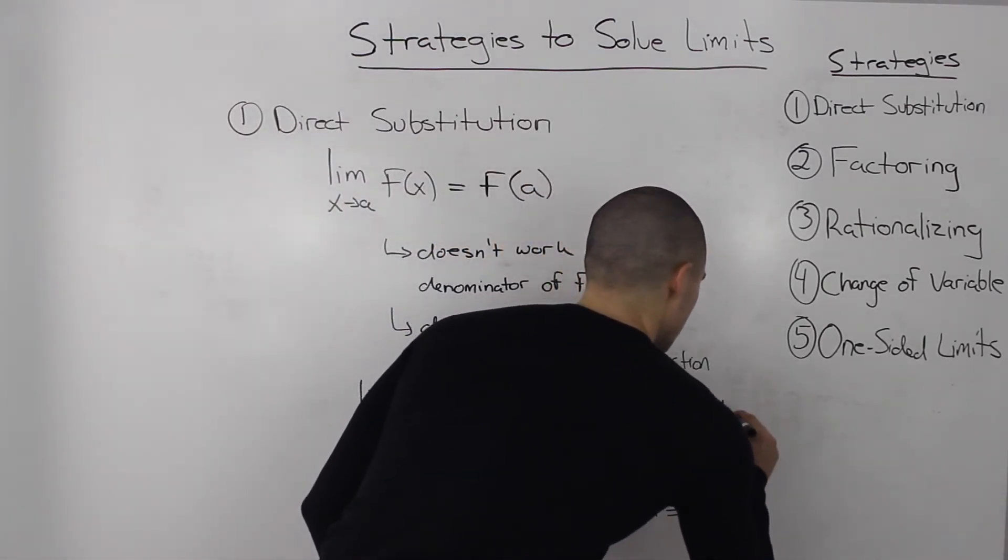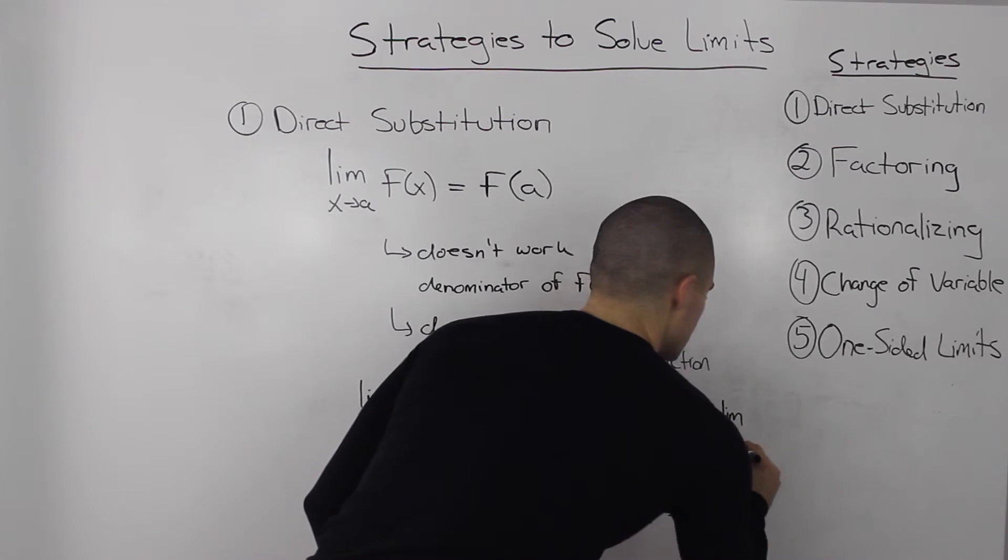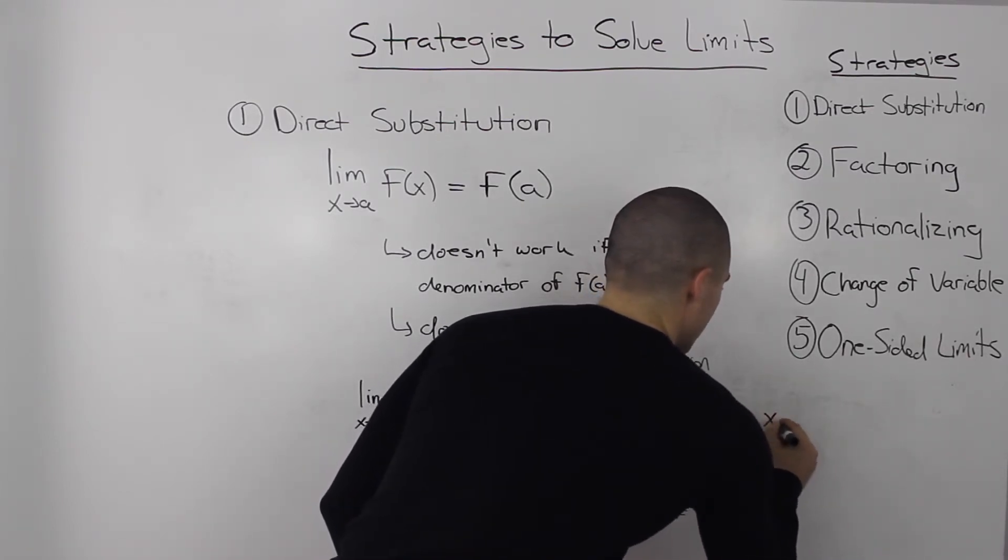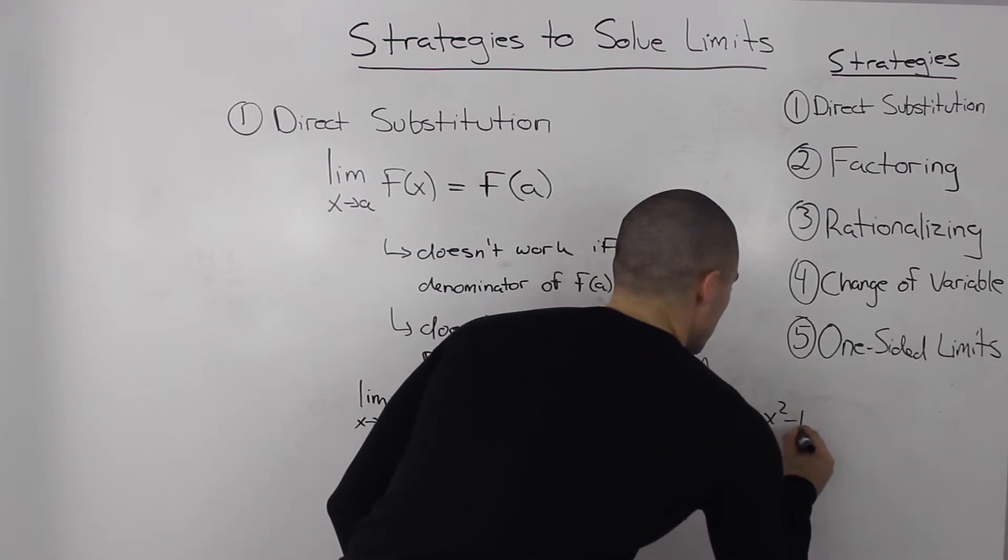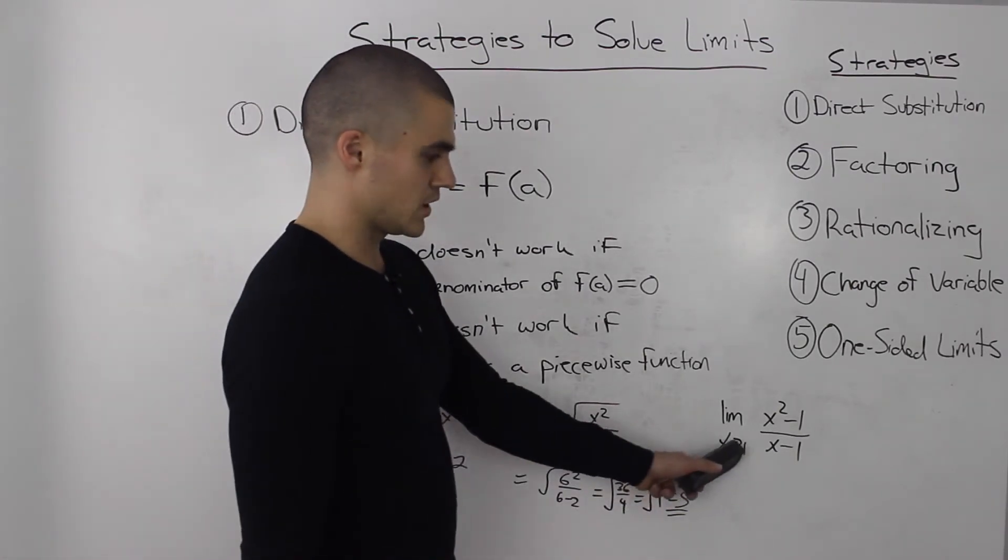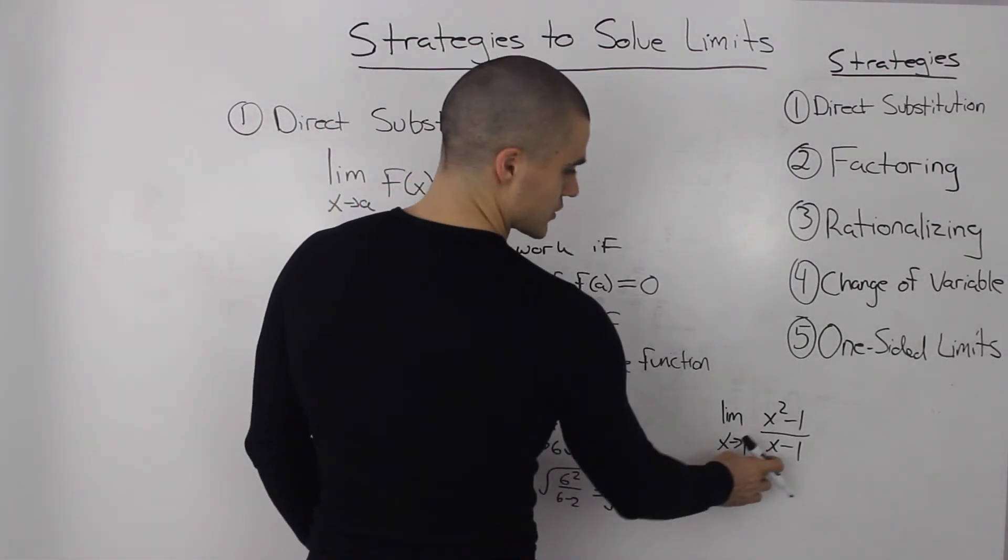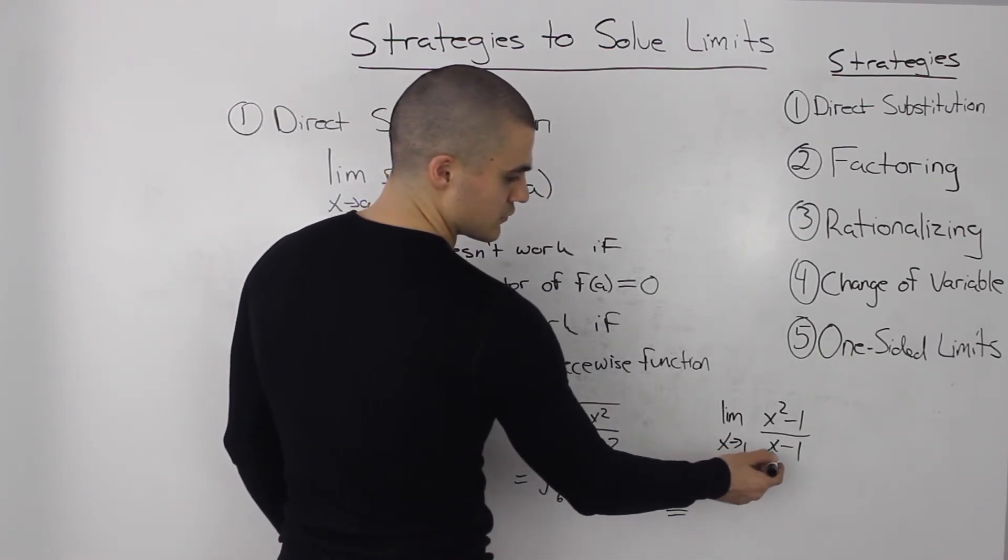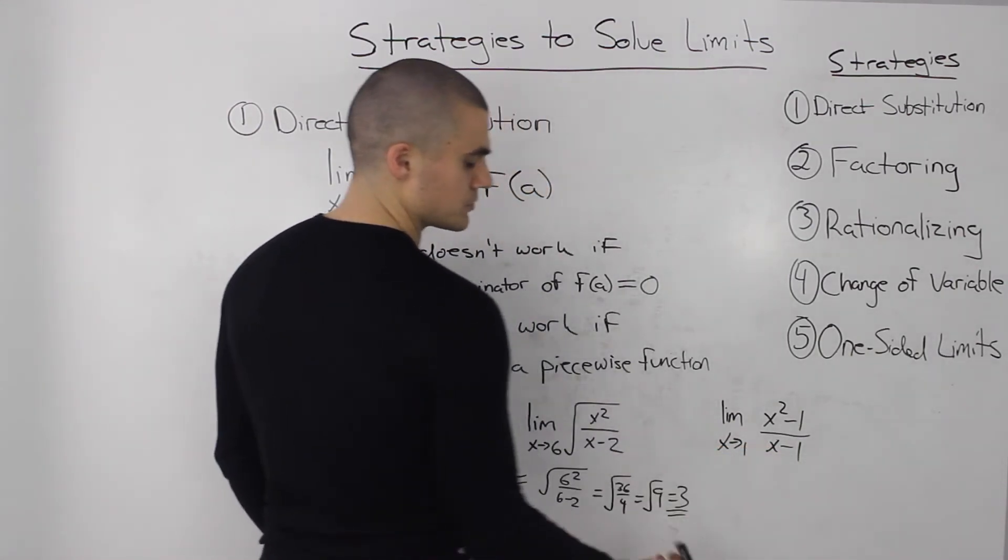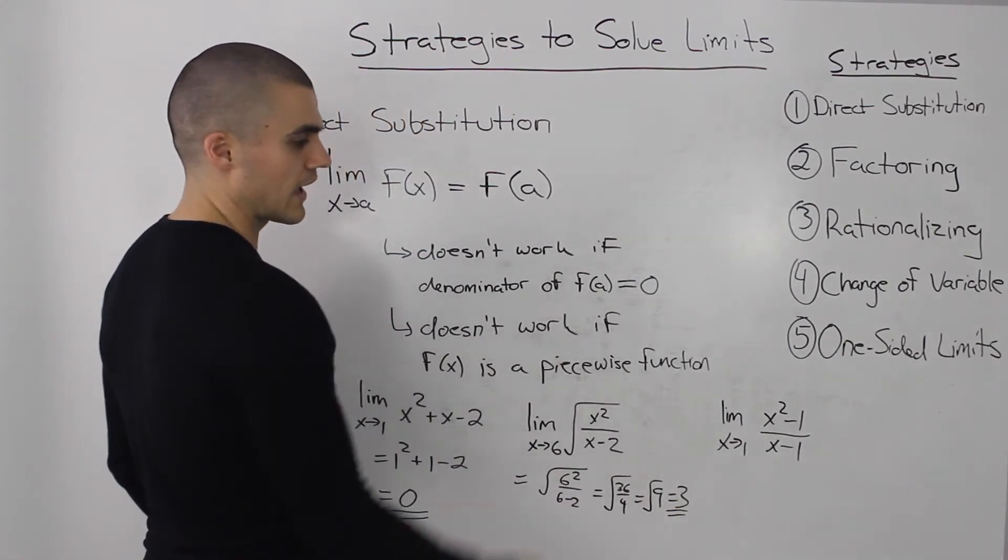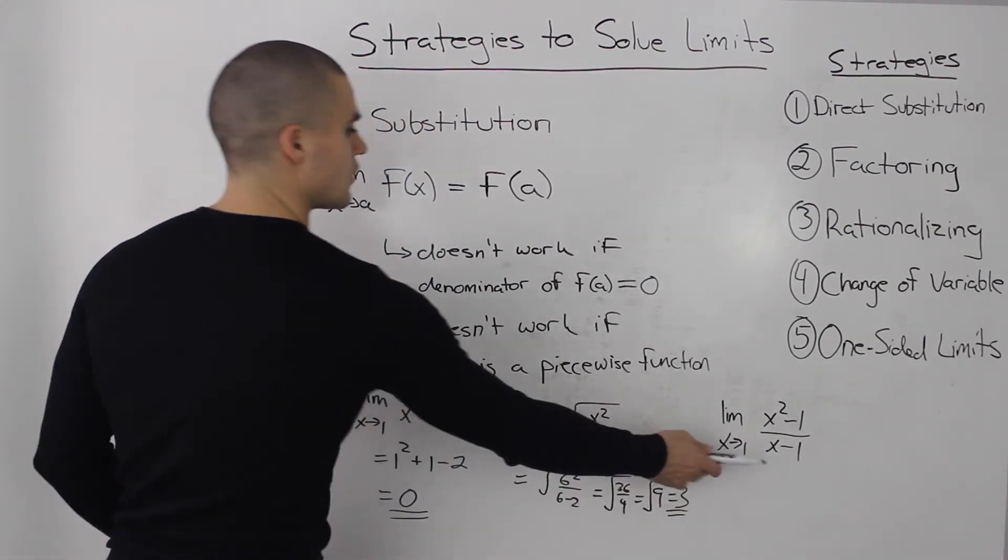Let's do another one. The limit as x approaches 1 of (x² - 1)/(x - 1). Now notice, if we plug in 1 into this function, the denominator will be zero, because 1 - 1 equals zero. So we won't be able to use direct substitution. We're going to have to use a different strategy to solve that limit.